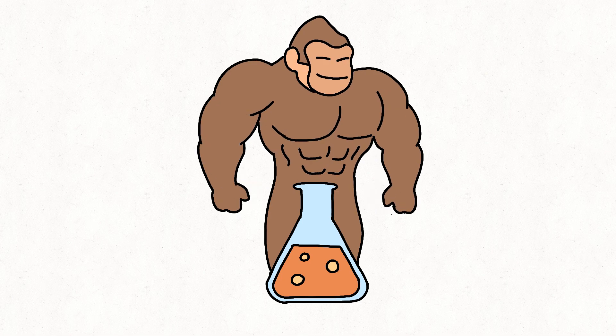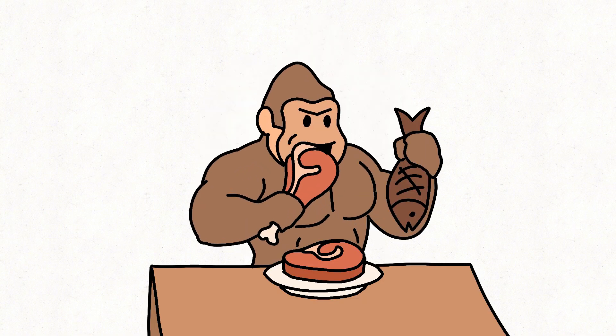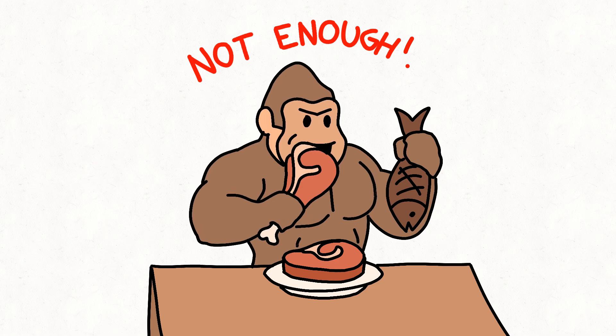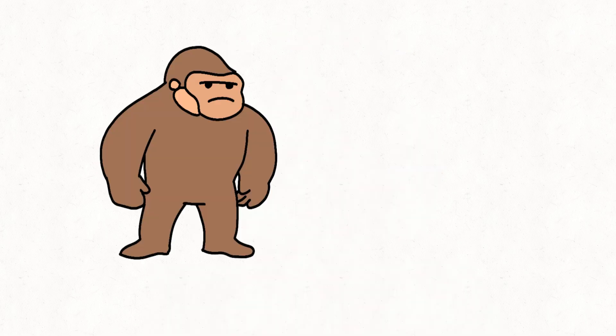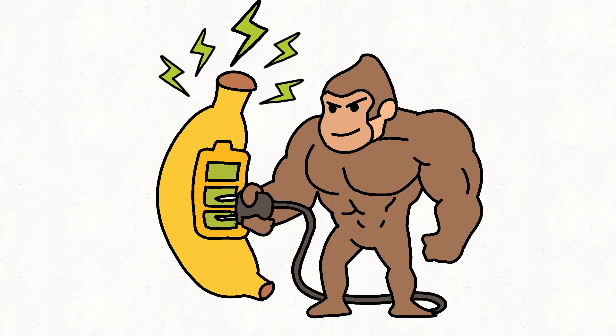Monkey's body makes some creatine naturally from amino acids like arginine and glycine. Monkey also gets some from meat and fish. But only a little, not enough for full jungle energy. That's why even natural apes benefit from adding an extra 3 to 5 grams daily. Think of it like topping off the banana battery before a big jungle battle.